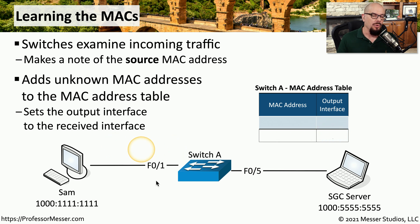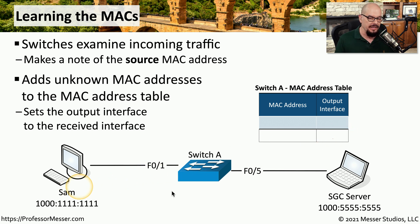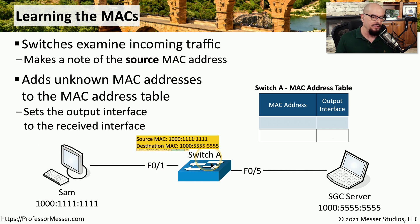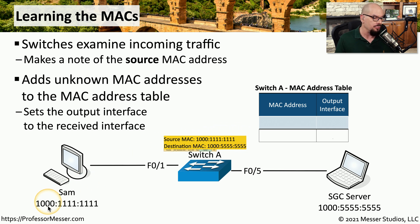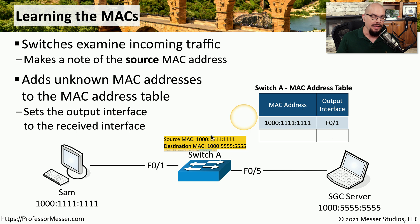Let's take a scenario where we've just powered up a switch — it has nothing in the MAC address table — and we're going to send information from Sam's computer to the SGC server. Sam sends traffic to the switch. The switch examines the source MAC address, which for Sam's device is 1,1,1,1,1,1,1,1. It then puts that MAC address into the MAC address table and identifies the interface where that information was received, in this case interface F0/1.